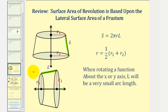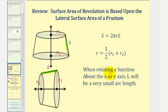Because we're rotating a curve about the x or y-axis, the length of l would actually be a small arc length. When rotating about the y-axis, notice that r would actually be a horizontal distance represented by x, and l would be the arc length. When rotating about the x-axis, notice that r would be a vertical distance, or y, and l would be a small piece of the curve, or arc length. So the thing to remember is, when rotating a function about the x or y-axis, l in our formula is a very small piece of arc length.